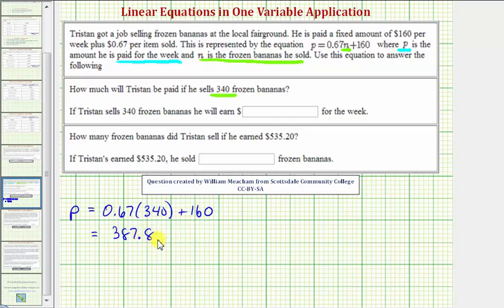This represents his weekly pay. Therefore, if Tristan sells 340 bananas, he will earn $387.80.